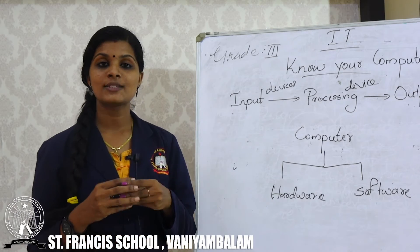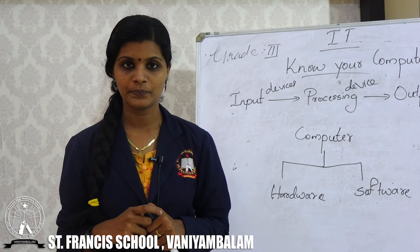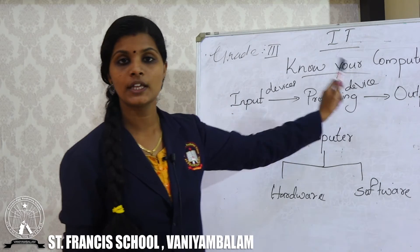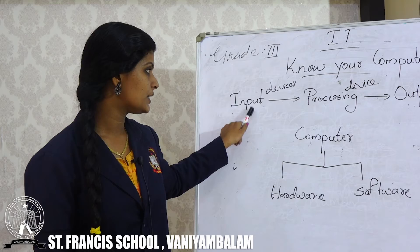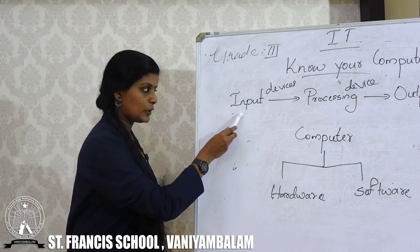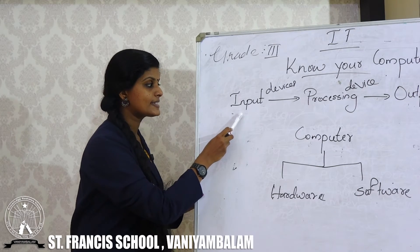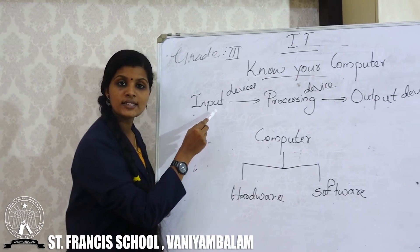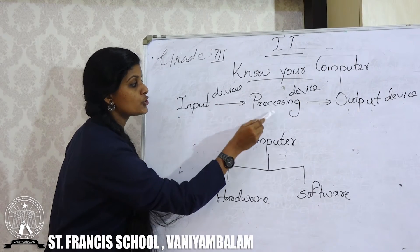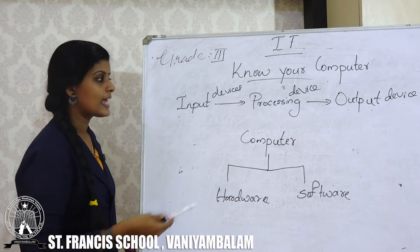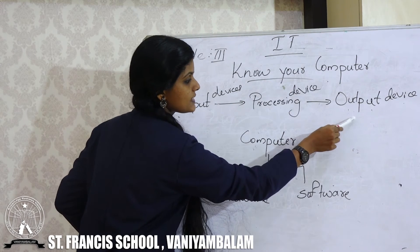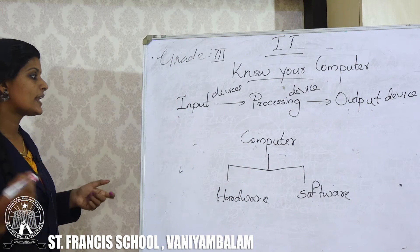In the first class we have discussed the working of a computer. There are three steps involved: input, processing and output. Input means entering some data or instruction into the computer. After entering this data, it will go into the processing device where an operation will be performed. After this, we will get a result — that is the output.